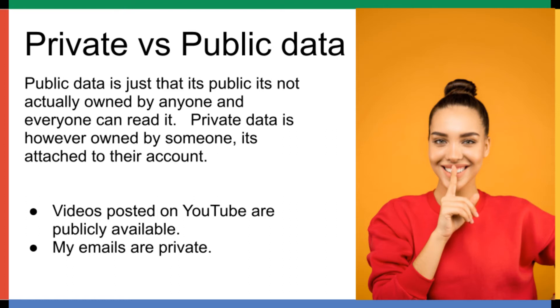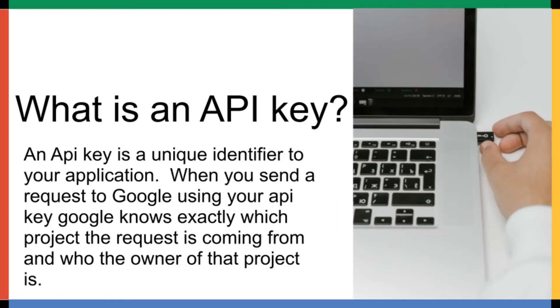So what is an API key? An API key is a unique identifier. It's generated by Google when you create a new API key on Google Cloud Console, and it's linked to your project.